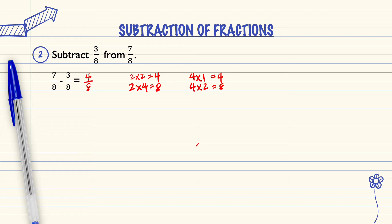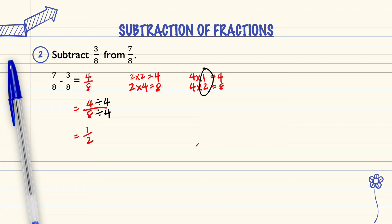So which times table must we choose? We must choose the largest times table — times table 4. This means 4 over 8 will be divided using times table 4. So the answer is 1 over 2.